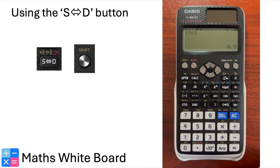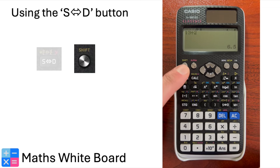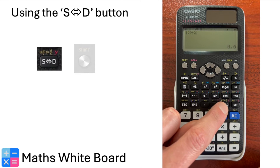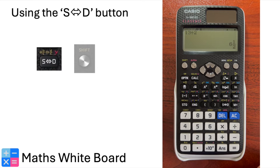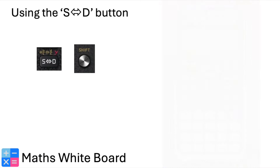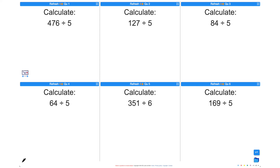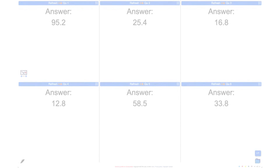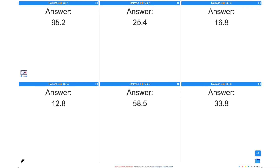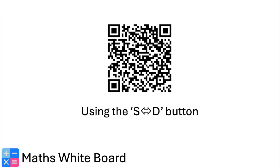But what if you wanted the mixed number form of your answer? Selecting Shift, then the SD button, will activate the function in yellow on your calculator and show you the mixed number form of your answer. Using the standard to decimal form button simplifies the process of converting numbers and is a handy tool for your mathematical calculations. Pause the video, have a go at these questions, then press play for the answers. Mark what you've done and scan the QR code for more questions.